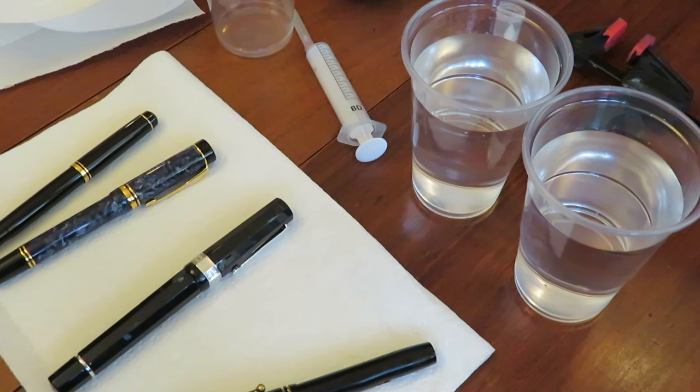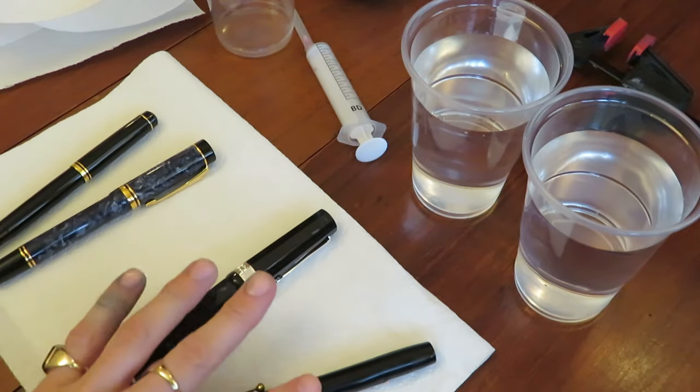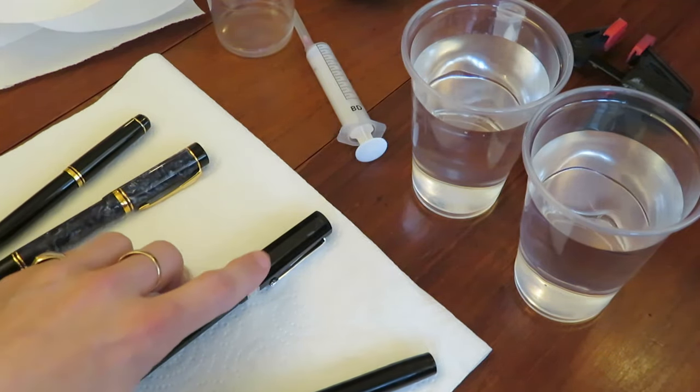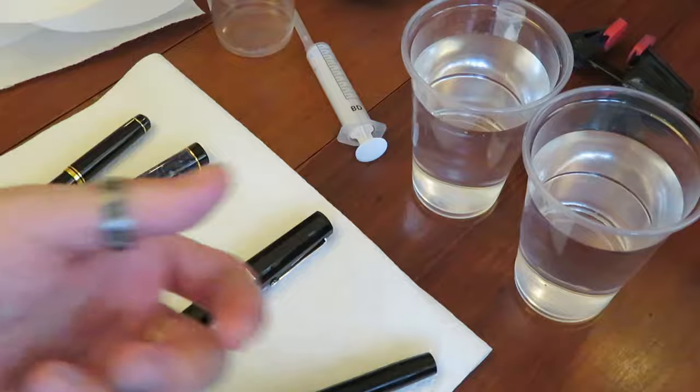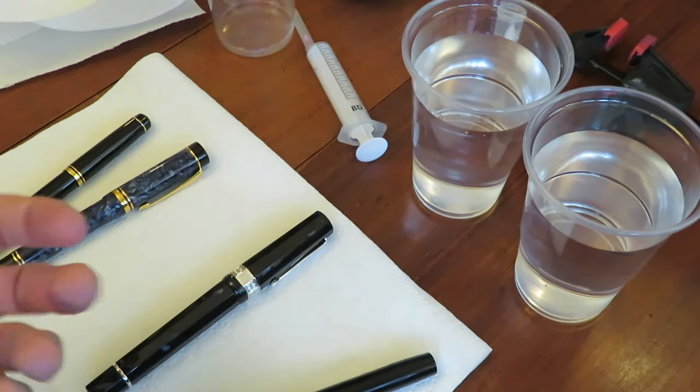With the Nonagon, which is a piston filler, the reason I said it's similar to the sack-based, because I can't take this pen apart. So, it's basically twisting up, and down, and up, and down, and up, and down, until it fills.